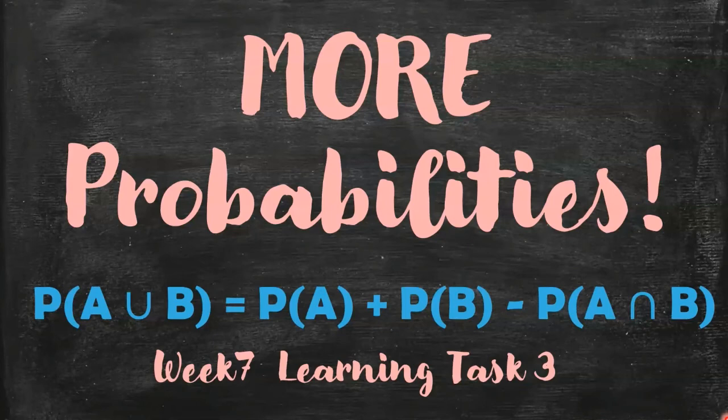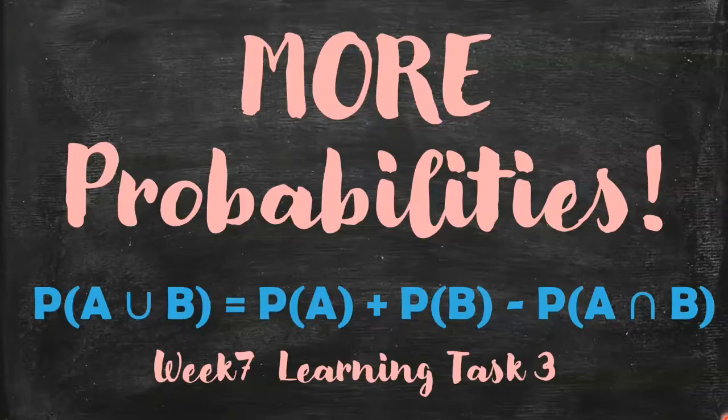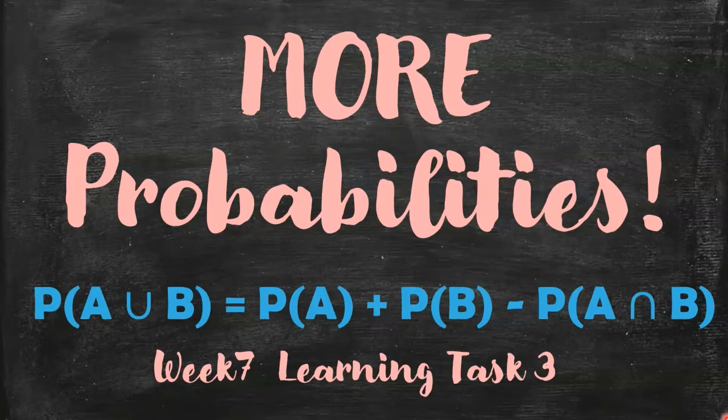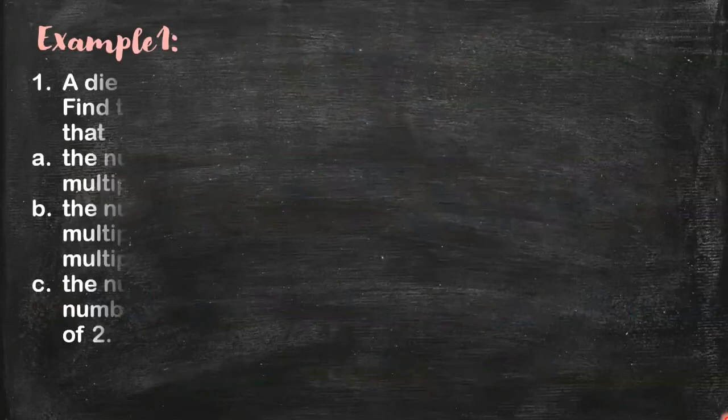Hey kids, it's me, Teacher Egg. This is the continuation of your Week 7 module. Let's start. So we get more probabilities here - probabilities of union of two events. Let's have this first example.